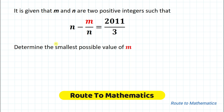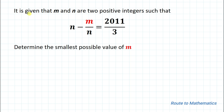Hello everyone, welcome to Route to Mathematics. In this video we're going to solve an interesting olympiad question. The given question: m and n are two positive integers such that n minus m divided by n equals 2011 divided by 3. We are asked to determine the smallest possible value of m.